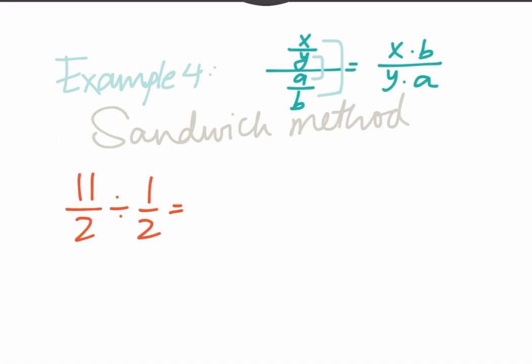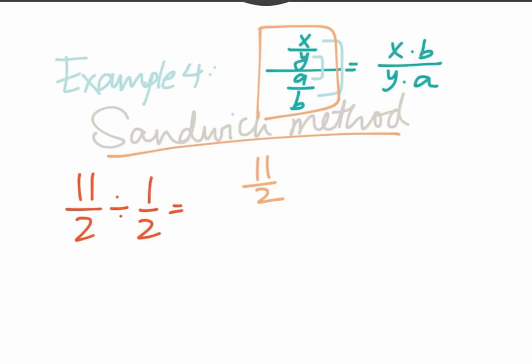Now, example number 4 is the sandwich method. Some people really prefer this method, so I'm going to teach you how to do it. The first thing is that you have to put it in a certain form — this form right here. So you're going to do 11 divided by 2, all divided by 1 divided by 2.